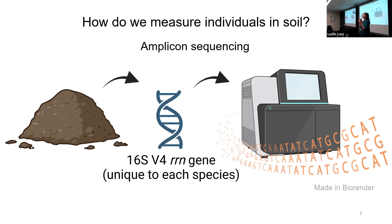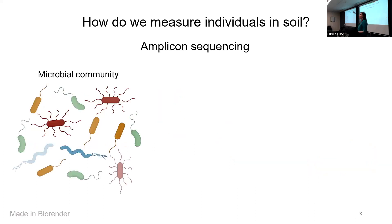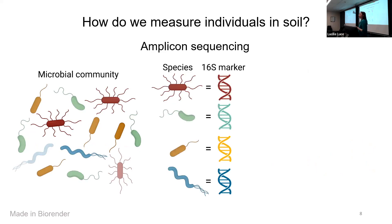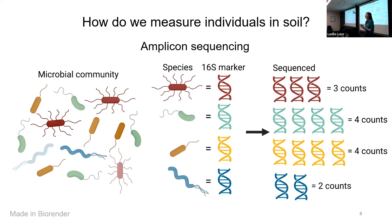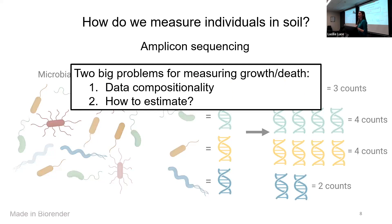When we sequence that particular marker, we can assess the diversity in the soil. Each species in that microbial community has a unique sequence associated with it, and when we sequence those markers we can count them up and see how many species are present and in what abundances. This is great, but it's actually not good enough for estimating growth and death. There are two big reasons: first, this data is compositional, and second, how do we estimate something like growth and death in really complex data?